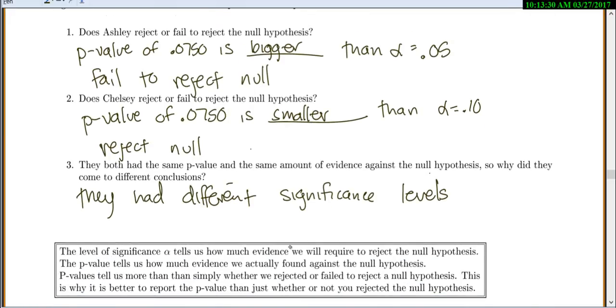Okay, so our little blurb here is the level of significance alpha, remember, tells you how much evidence you will require to reject the null hypothesis. So Ashley said in advance, she was using a smaller alpha, so she was going to require stronger evidence to reject the null, and she just didn't have enough evidence to do it.